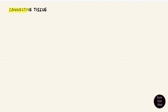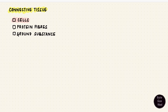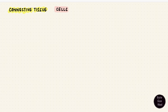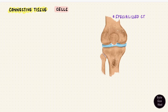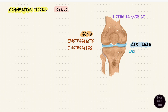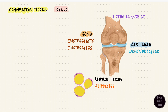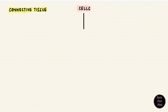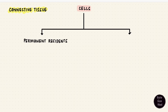Connective tissue has got cells, fibers, and ground substance. First let's look at those cells. Obviously, specialized connective tissue would have cells with special names — like osteoblasts and osteocytes in bone, chondrocytes in cartilage, adipocytes in adipose tissue. But in general, connective tissue has two groups of cells: those that permanently reside in the tissue, and those that come into the tissue for some purpose from somewhere else — the transient cells.